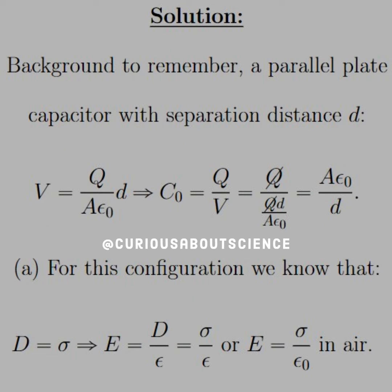To start, let us first remember that back in chapter 2, we found the potential difference of a parallel plate capacitor with a separation distance d as such. Where V equals Q over A epsilon naught times d, and therefore the capacitance is Q over V,